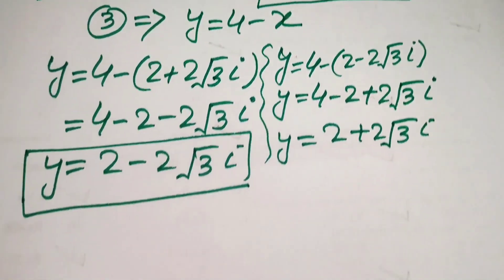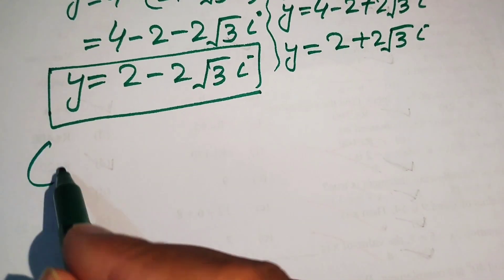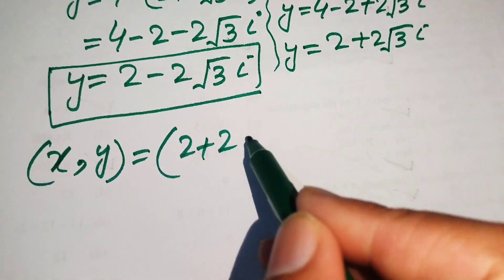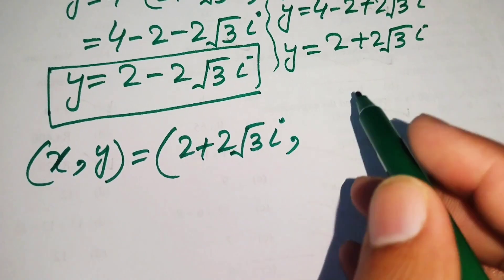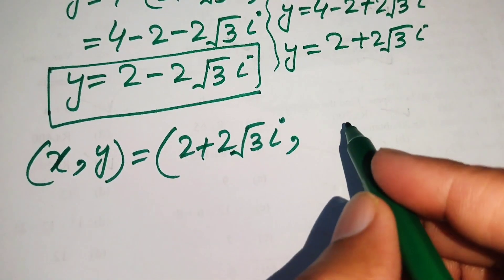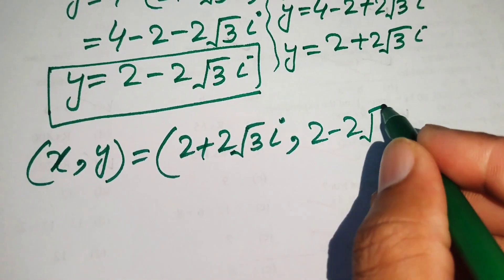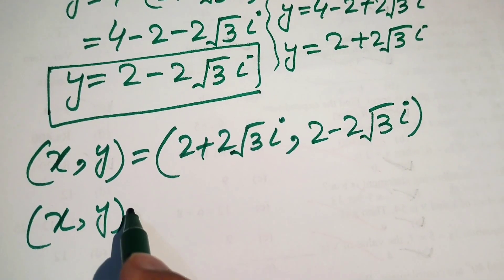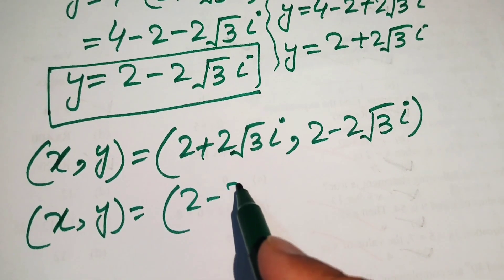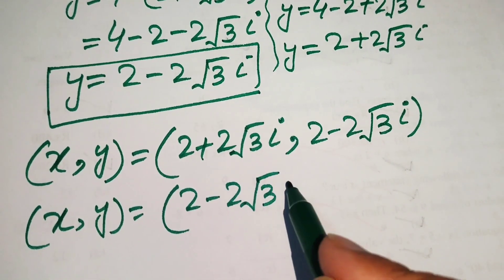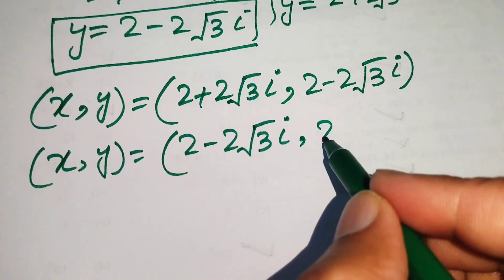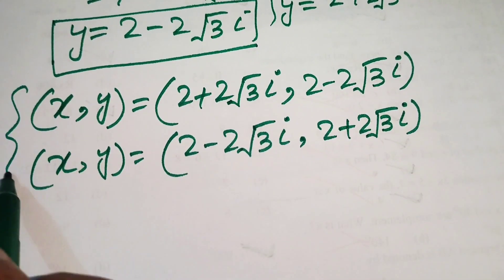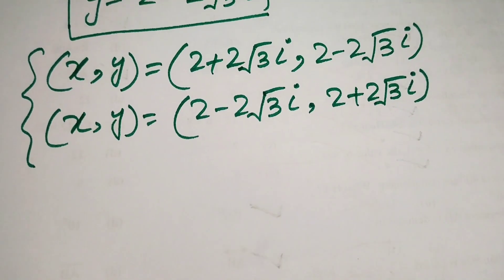So we have two conjugate solution pairs. The first solution is (x, y) = (2 + 2√3·i, 2 − 2√3·i), and the second solution is (x, y) = (2 − 2√3·i, 2 + 2√3·i).